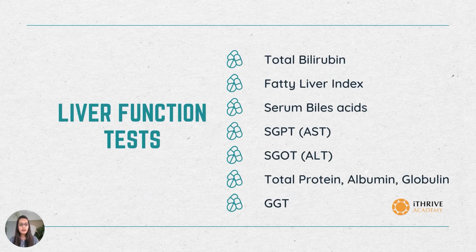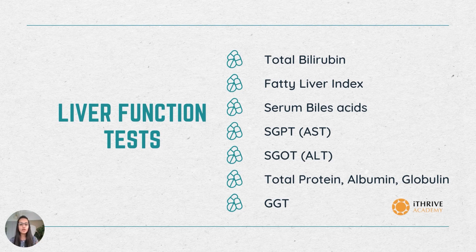Coming to the liver function tests. These are a set of tests which help you know about the status of a functioning liver in the body. Starting with total bilirubin — as we already saw, bilirubin is the breakdown product of RBCs which is excreted out of the body through the liver via bile acid.